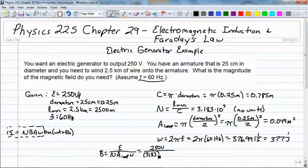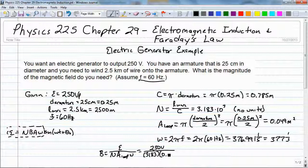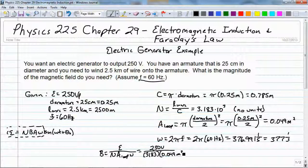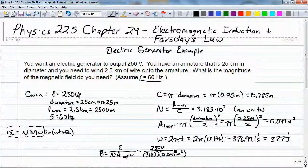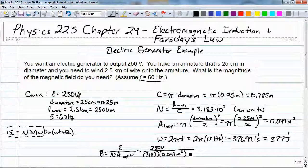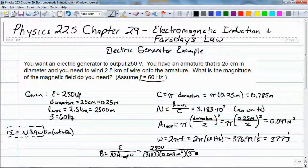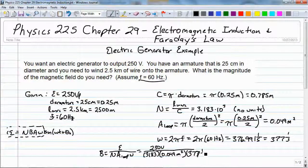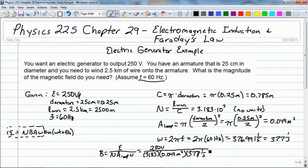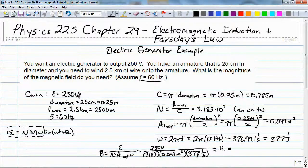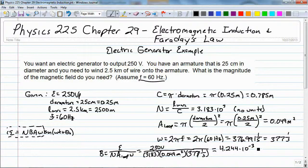Insert our values, and we got 377 per second. And that makes our magnetic field strength that we need 4.244 times 10 to the minus 3 teslas, or that's 4.244 milliteslas.